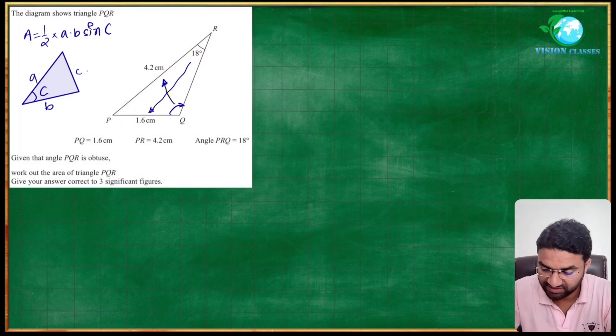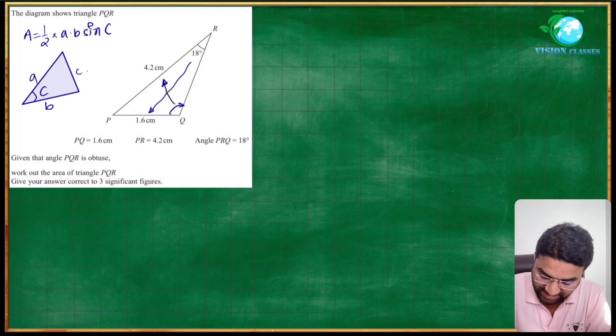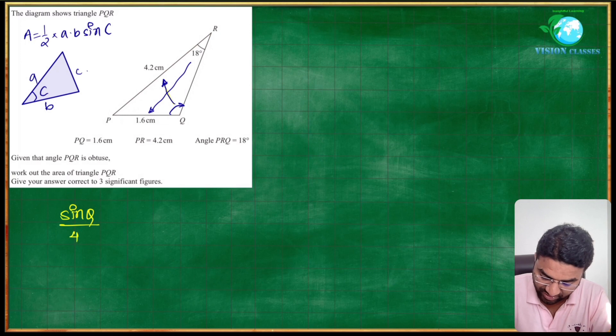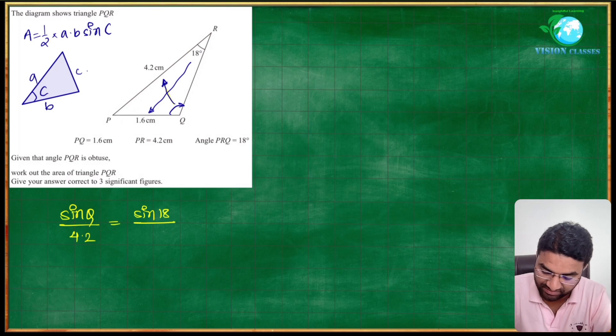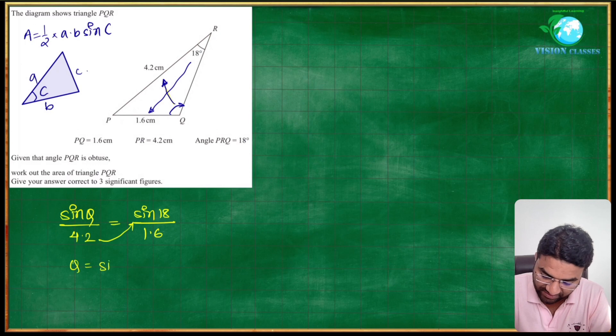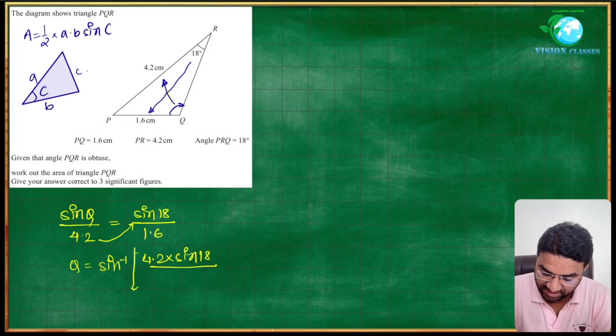So we can say that sine of Q upon 4.2 equals sine of 18 upon 1.6. Transfer this 4.2 to the right hand side and calculate the Q value. Q equals sine inverse of bracket 4.2 times sine of 18 upon 1.6.